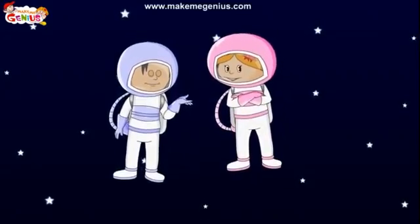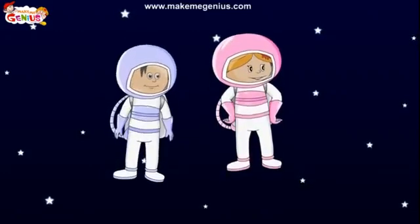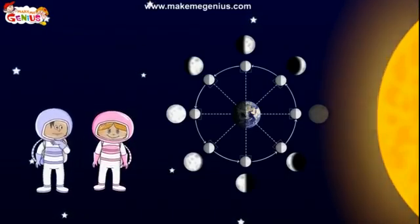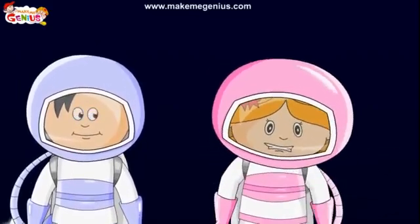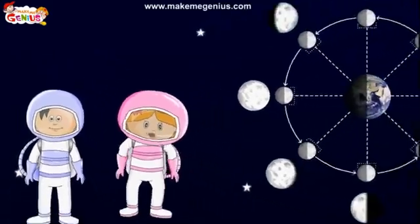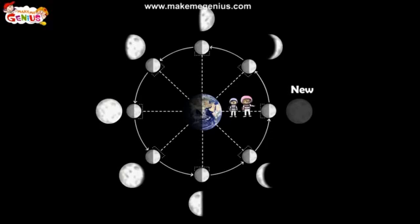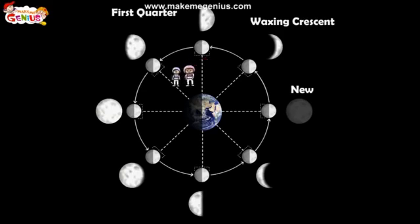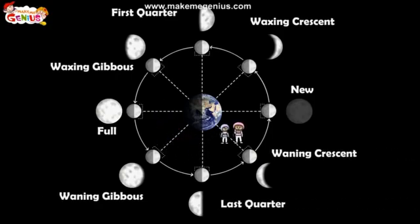How many phases of the moon are there and what are they called? The phases are named after how much of the moon we can see and whether the amount visible is increasing or decreasing each day. The phases are: new moon, waxing crescent, first quarter, waxing gibbous, full moon, waning gibbous, last quarter, and waning crescent.